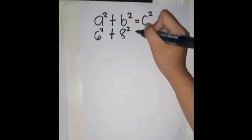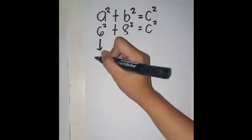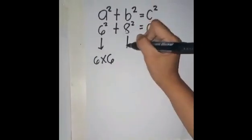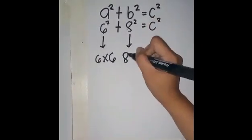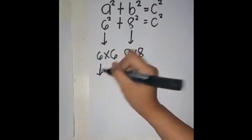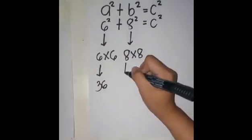Simplifying from here, 6 squared is 6 times 6 or 36, and 8 squared is 8 times 8 or 64. So we have 36 plus 64 equals x squared. Next, 36 plus 64 is 100, and we have 100 equals x squared.